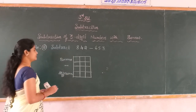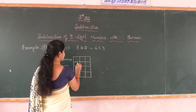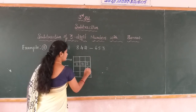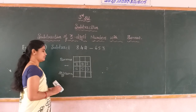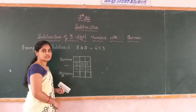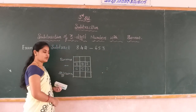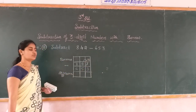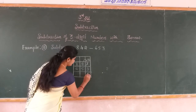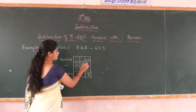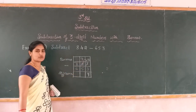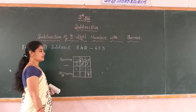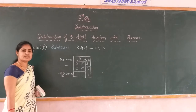Write the bigger number first: 2 is in ones, 4 is in tens, and 8 is in hundreds. Below: 3 is in ones, 5 is in tens, and 6 is in hundreds. You start from the ones place: 2 minus 3 is not possible, so take borrow — it becomes 12. 12 minus 3 is 9. The 4 gives one borrow, so it becomes 3; 3 minus 5 is not possible, so take borrow from 8 — it becomes 13. 13 minus 5 is 8.